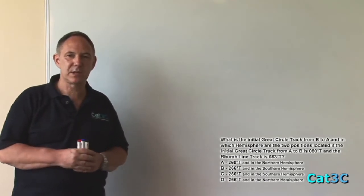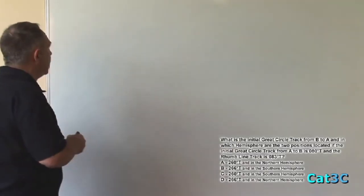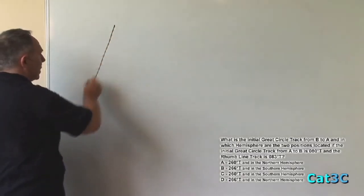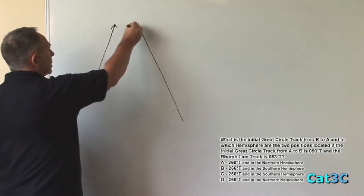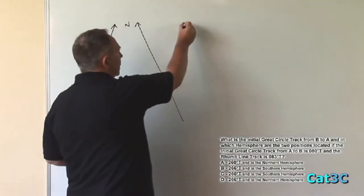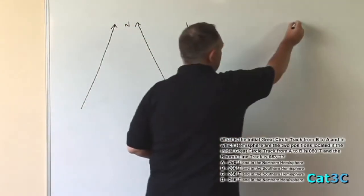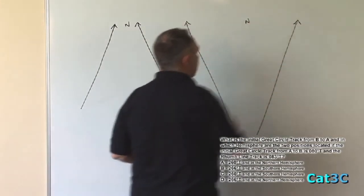To answer this question, what I'm going to do is create two diagrams, one of the Northern Hemisphere, one of the Southern Hemisphere and compare them to see which one can be right and which one will be wrong. So start off by drawing the meridians in the Northern Hemisphere converging towards the top. In the Southern Hemisphere, the meridians diverge towards the top, like so.